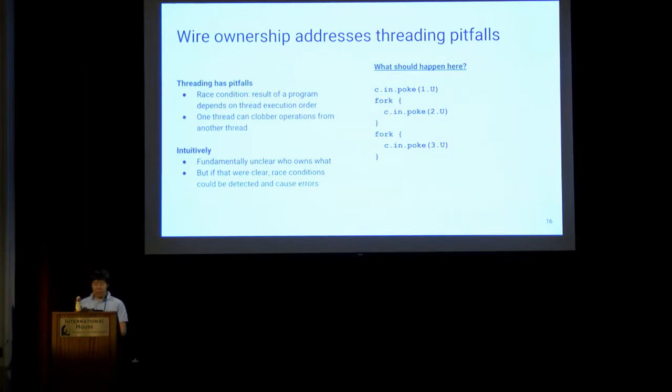One major pitfall of threading both across the software world and even in Verilog test benches is race conditions, which basically means the order threads are run in can affect the outcome, such as if one thread clobbers operations from another. If you look at the example up there where three threads simultaneously poked the same wire, it's unclear what the result should be. Having a clear idea and limitations on ownership could help alleviate this because that could be used to detect potential for non-determinism and you could at the very least tell the user, hey, you goofed, fix your test.